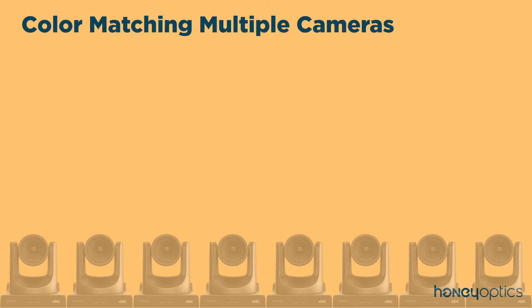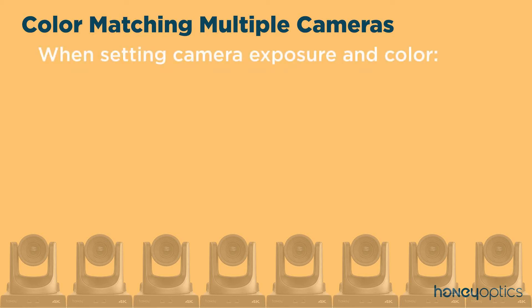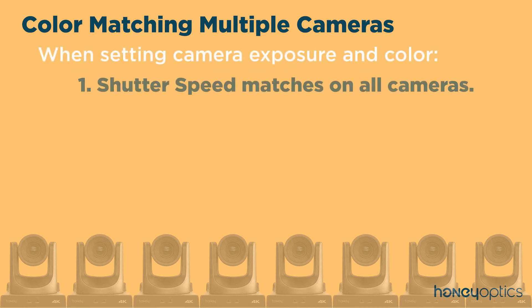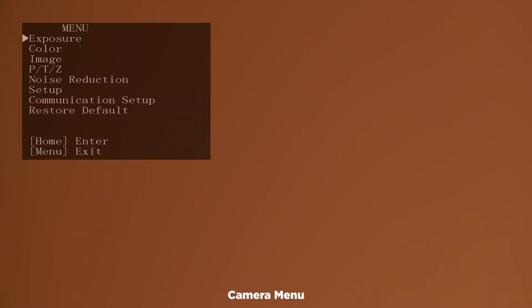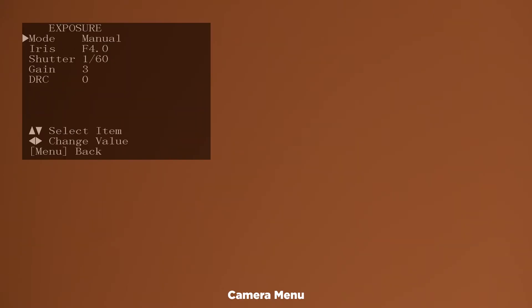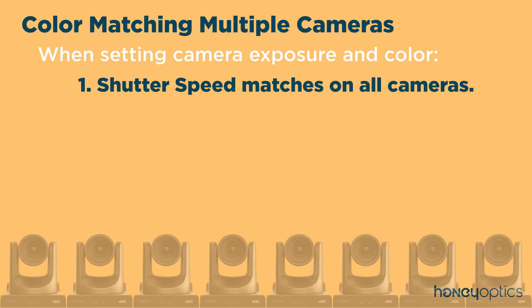First, some things to pay attention to from the previous videos when setting your camera's exposure and color. Make sure that your shutter speed matches across all your cameras. If a different camera angle requires a different exposure, use your iris or the luminance adjustment to dial that in. Keep the shutter speed consistent — this will give you the same amount of motion blur for all your cameras.